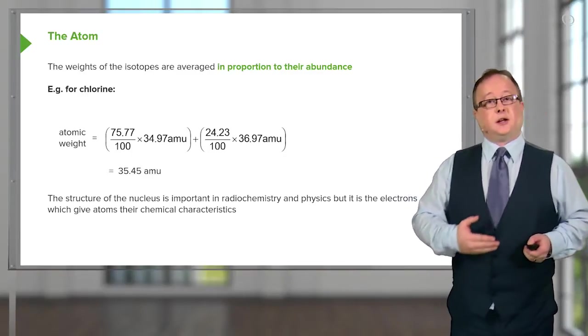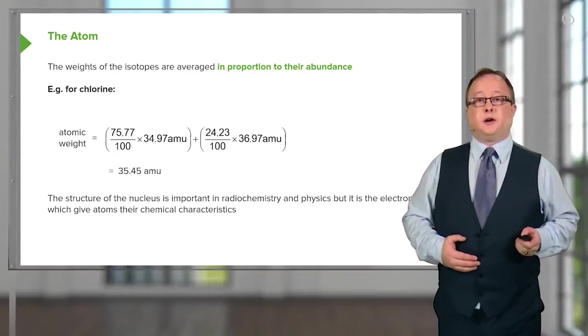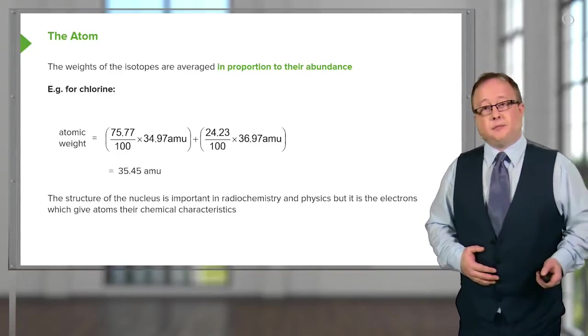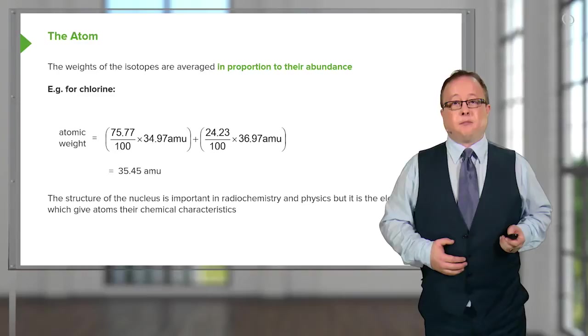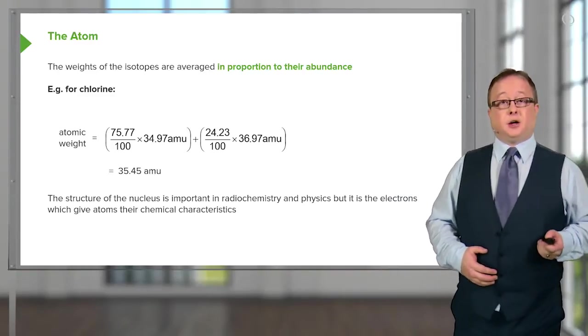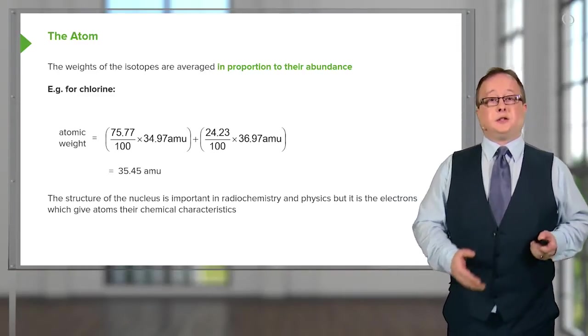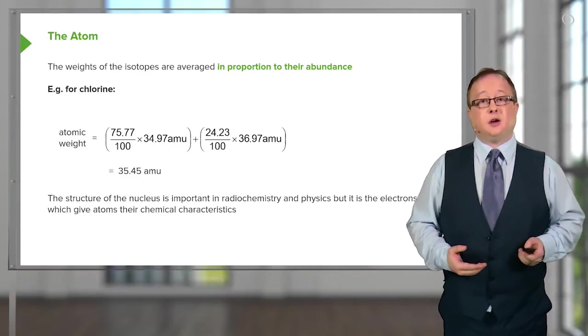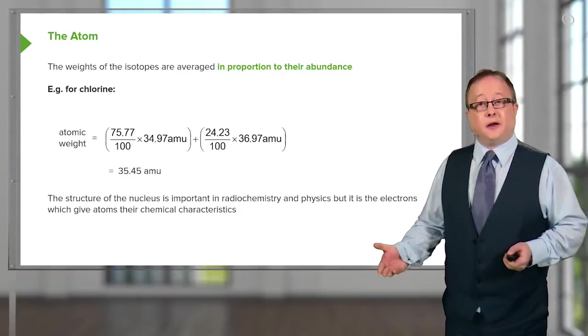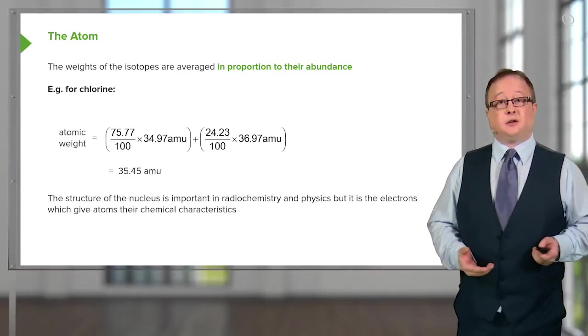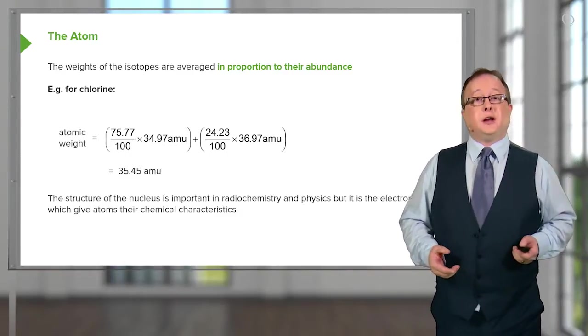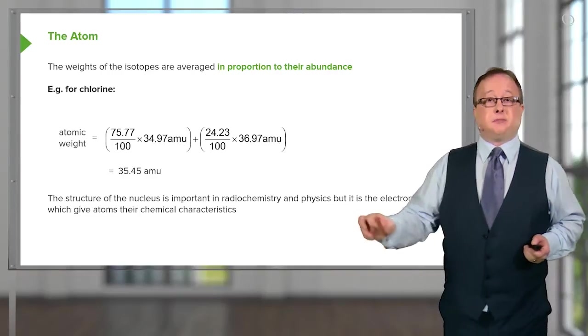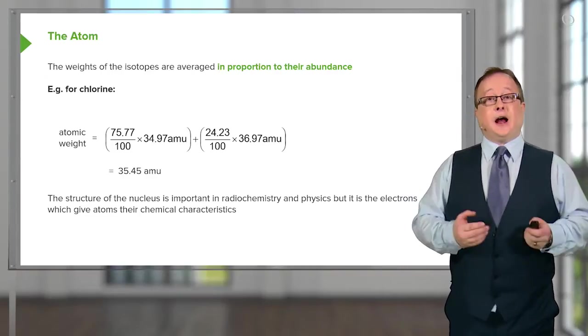Now, I'm not going to go through this entire equation with you. Suffice to say, conceptually, it's relatively easy to do. Let's say for the sake of argument, you had 75 atoms in one hand, each weighing 35 grams, and you had 25 in the other hand, each weighing 37. All you would have to do is multiply the mass by each percentage and then average the two.